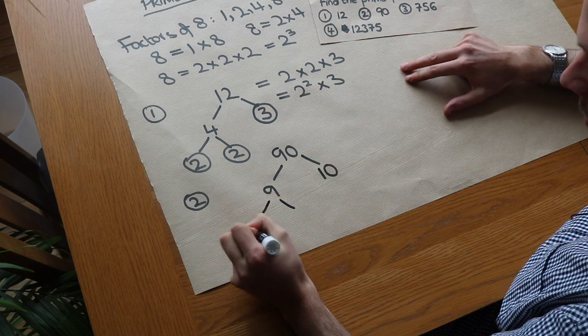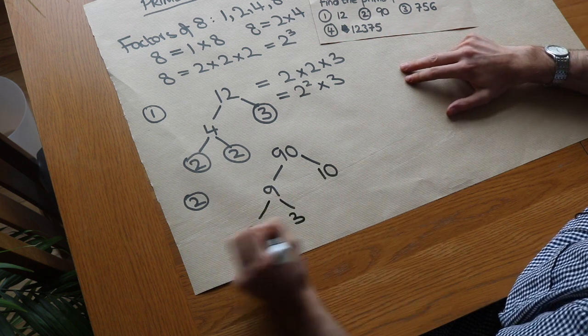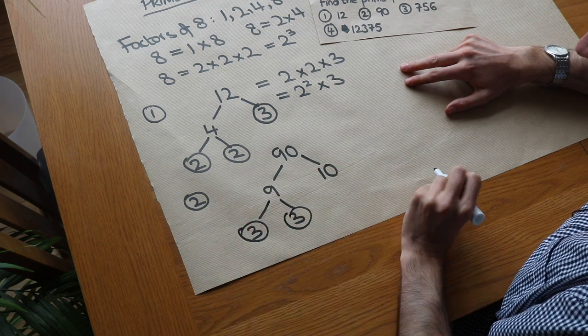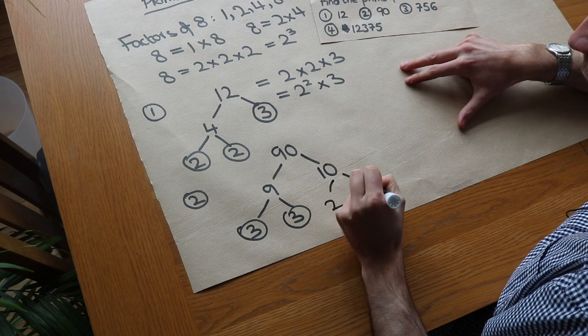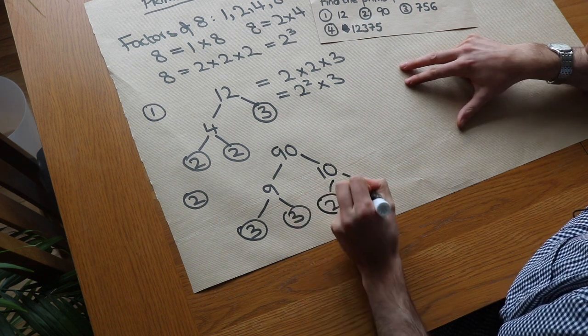So 9 is 3 times 3. Now they are both primes so we can circle them. Now 10 is not prime so we have to split that up. We could write it as 2 times 5. Now they are both prime so we could circle them.